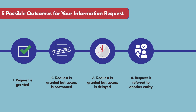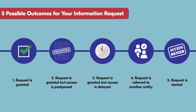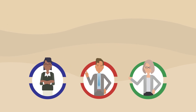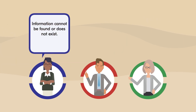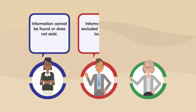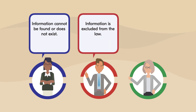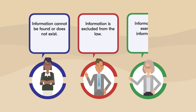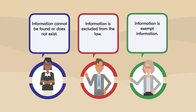Four: your request is referred to another entity that actually holds the information. Or five: your request is denied for one of the following reasons — the information cannot be found or does not exist, the information is excluded from the law, or the information is exempt, such as information that could compromise national security or an ongoing criminal investigation.